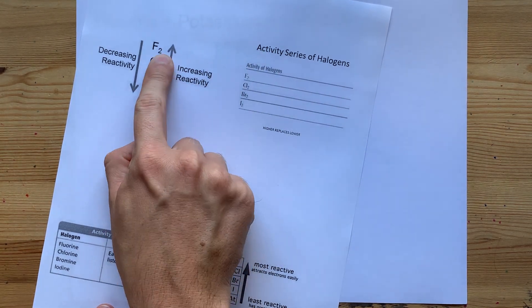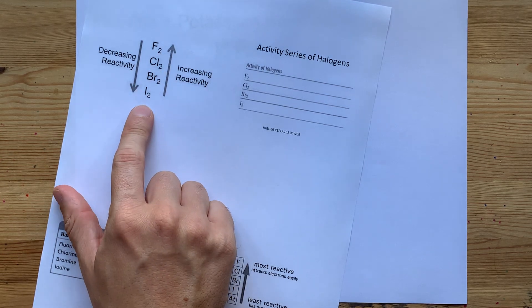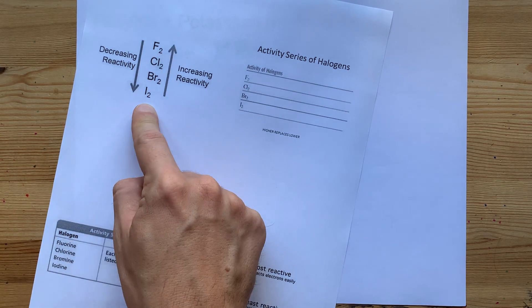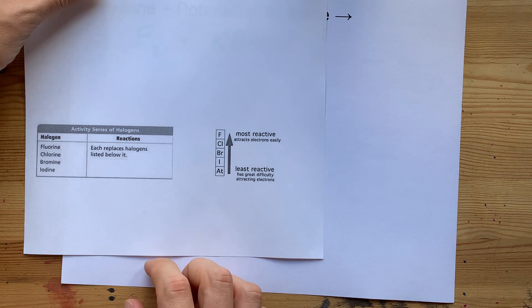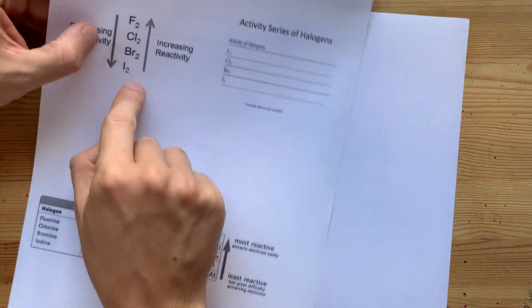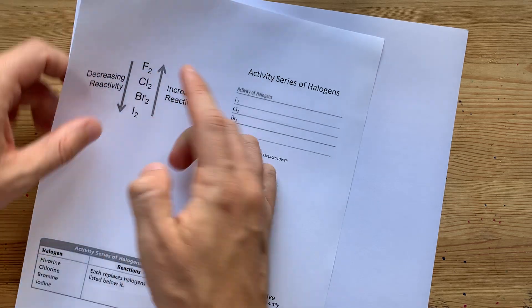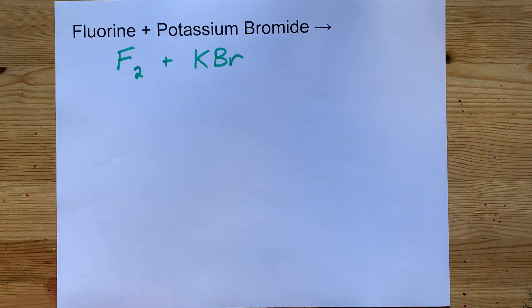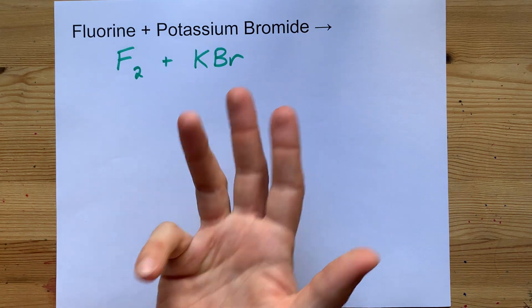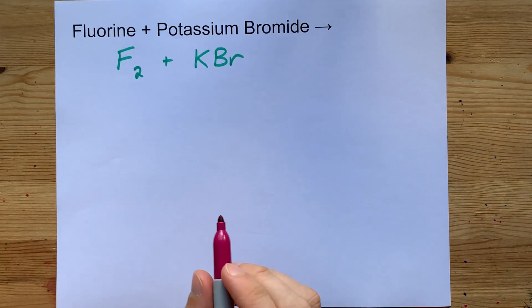Fluorine is the most reactive halogen. Going down the periodic table, iodine is the least reactive halogen, although some teachers will include astatine, and we now have tennessine below that. The most common ones are fluorine, chlorine, bromine, and iodine. So fluorine will always displace other halogens. Iodine will not — iodine will get displaced more often than not.